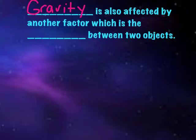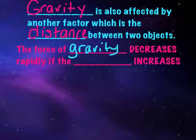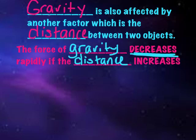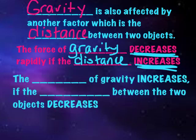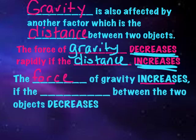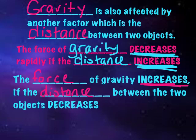Gravity is also affected by another factor, which is the distance between two objects. The force of gravity decreases rapidly if the distance increases — meaning the force of gravity between two objects becomes much weaker as those two objects get farther and farther away. The force of gravity increases if the distance between the two objects decreases — meaning as the objects become closer together, the force between those two objects is going to become much greater.